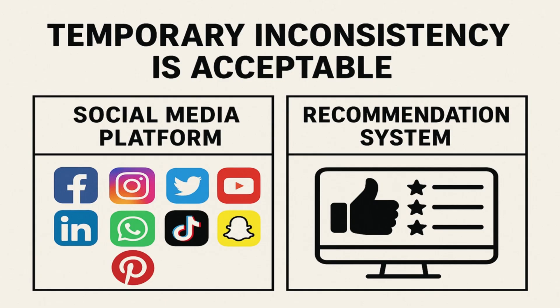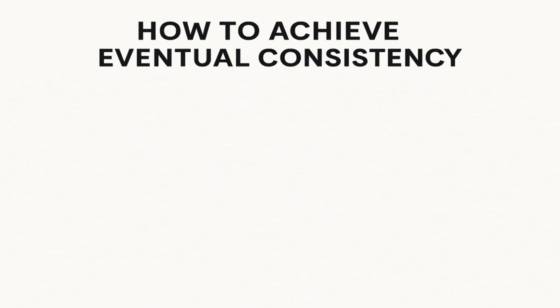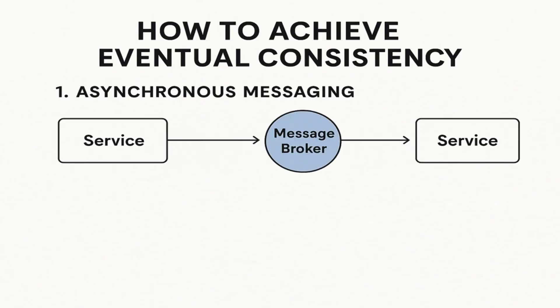We can use eventual consistency for social media details such as like counts and shares, where it is acceptable to have temporarily inconsistent data without impacting user experience. Recommendation systems are also a very good use case for eventual consistency. Now, let's understand how we can achieve eventual consistency in our system. We can implement it using a combination of a few design patterns.